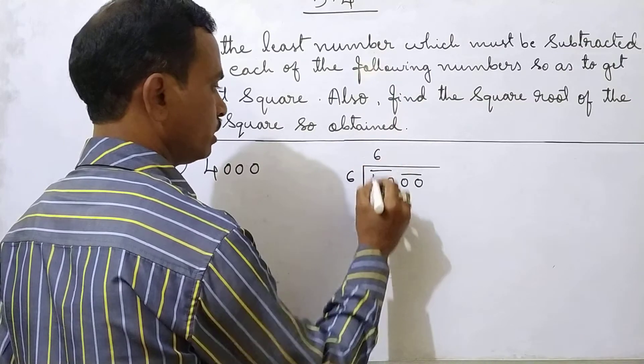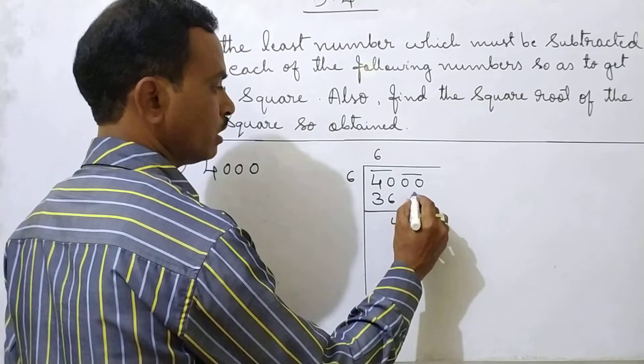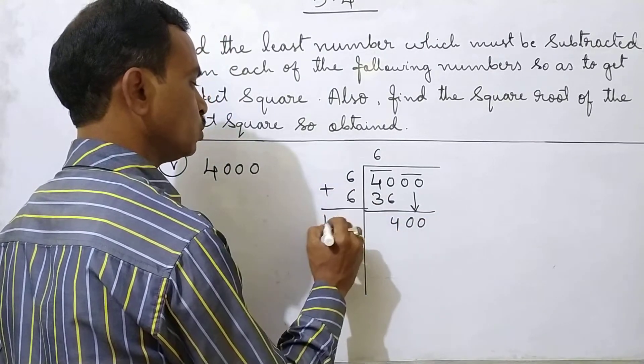6,6 you should take 36. 4 remainder. The next group you take 0,0 here. 6 you should make it double. 6 plus 6, 12.